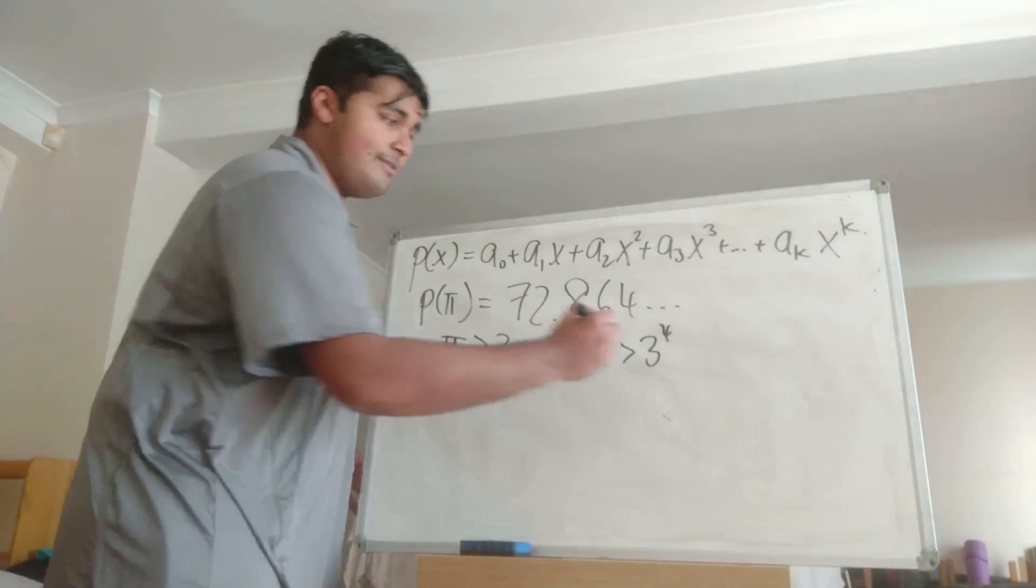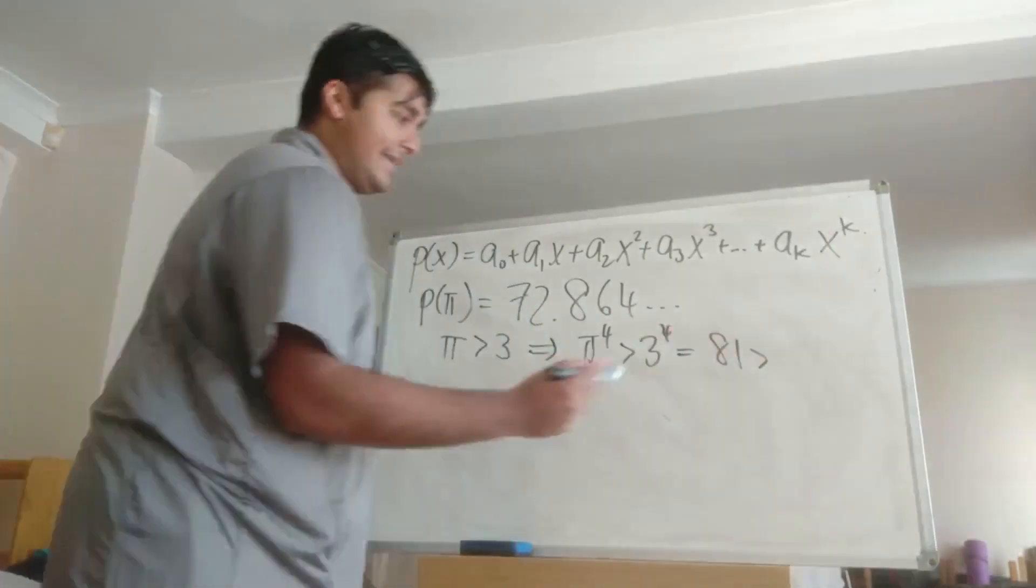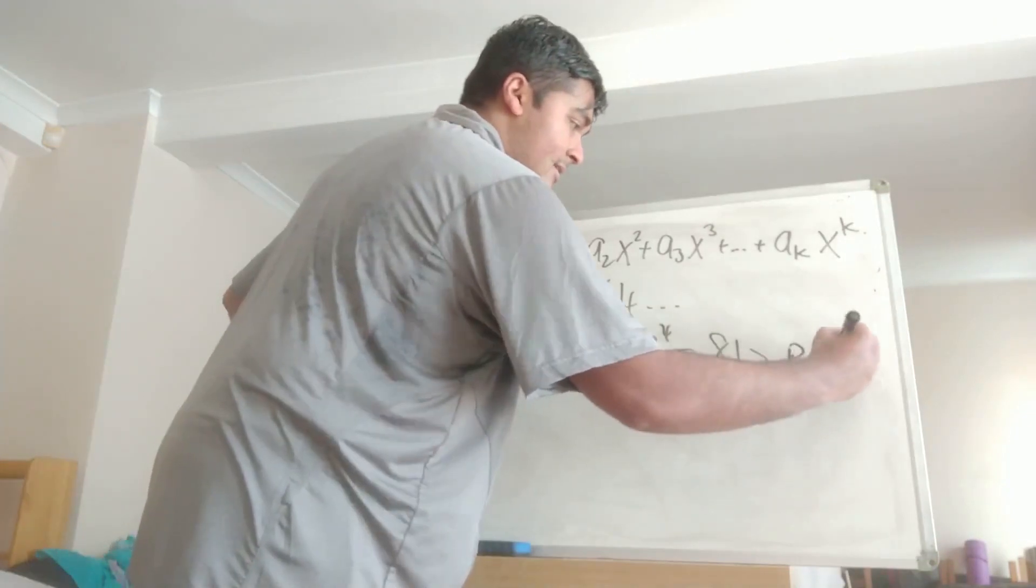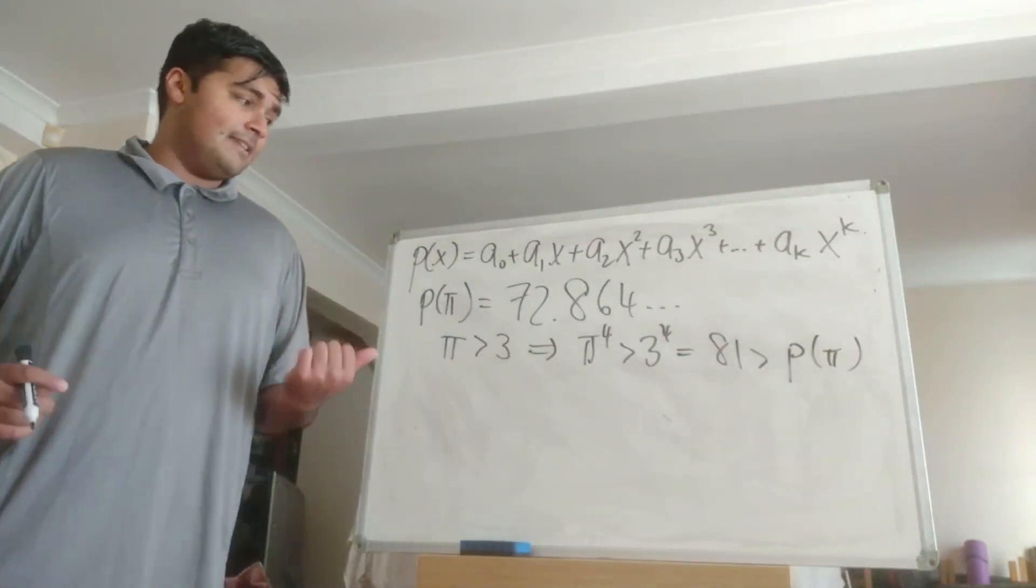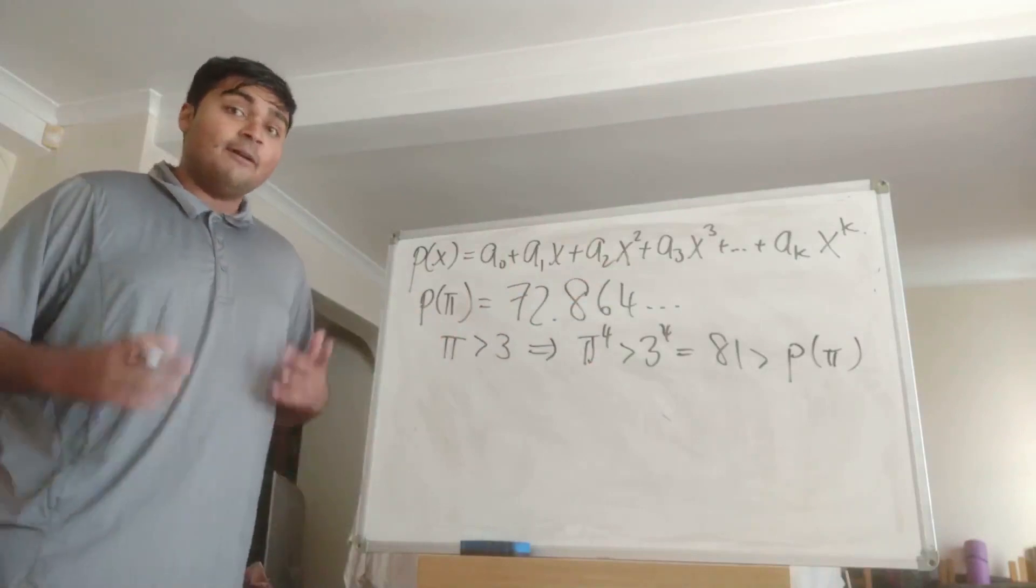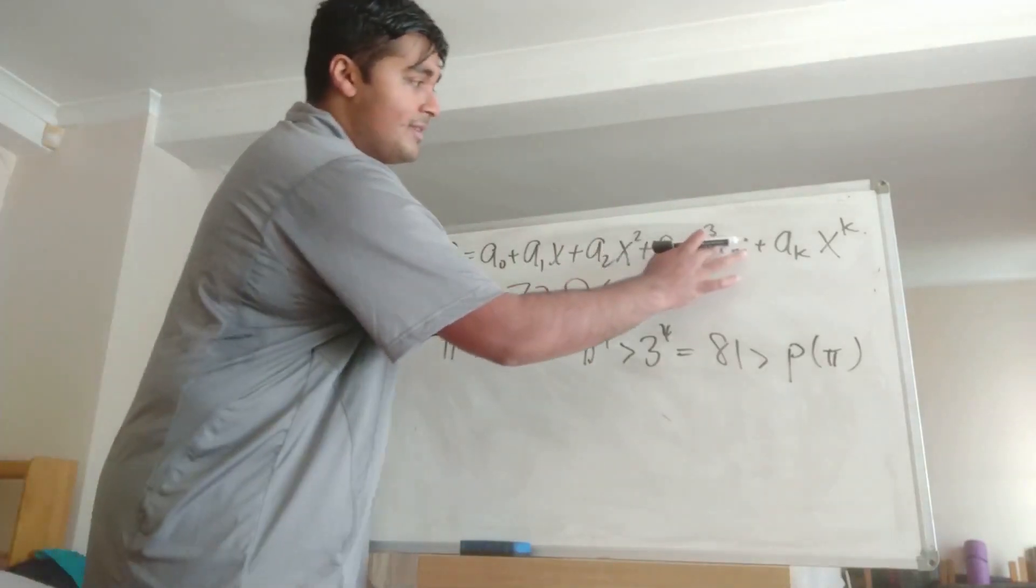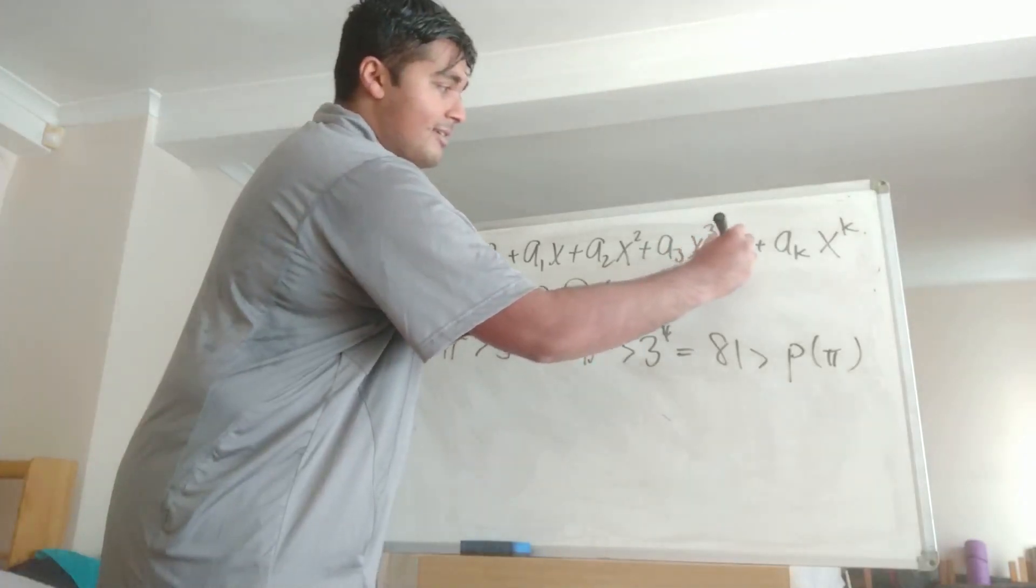And 81 is very clearly bigger than 72.864 so this is bigger than P(pi). So pi^4 is bigger than P(pi). So what that tells us is that any term from the x^4 term onwards, the coefficient must be zero.